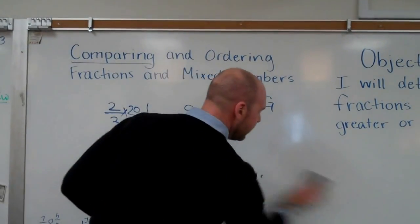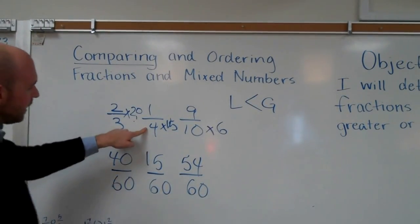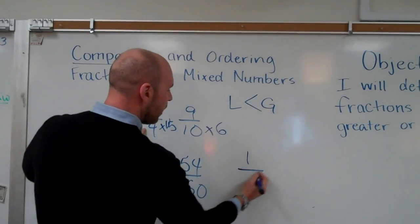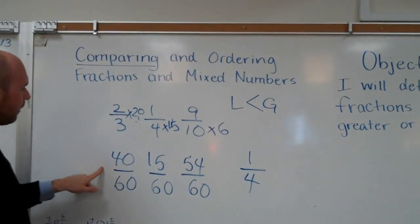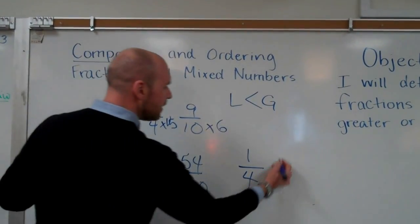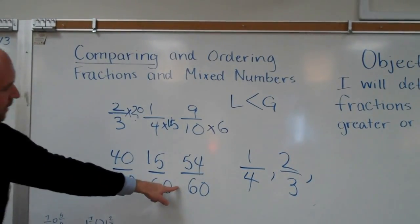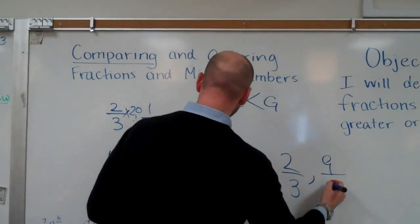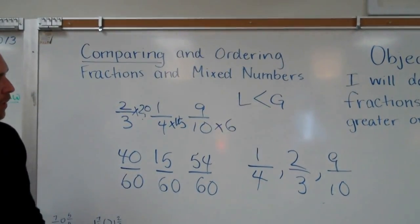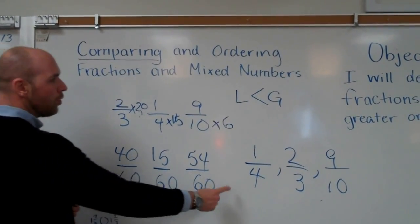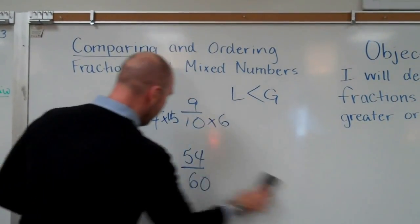So if I erase that, I can tell you that fifteen sixtieths is the smallest fraction, or one-fourth. And then forty-sixtieths, or two-thirds, is the second smallest, or the middle. And then nine-tenths, fifty-four sixtieths, is the largest, or the greatest. So that is the correct order if I'm ordering least to greatest. Let's try one more.